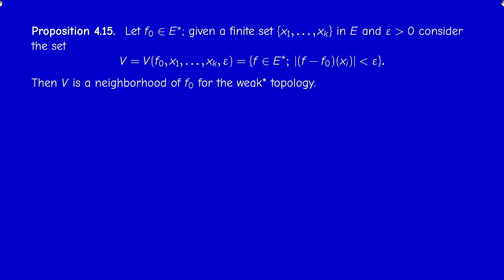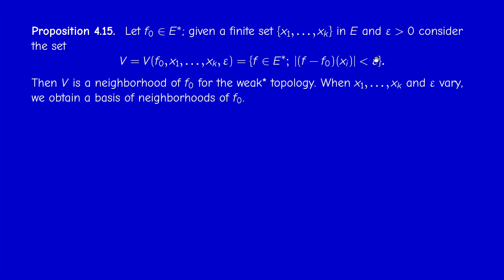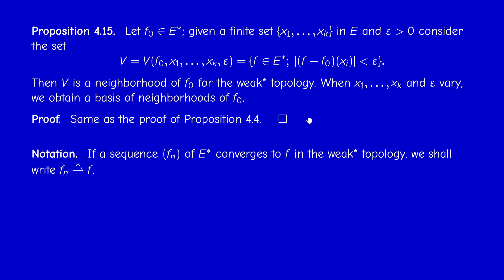V is a neighborhood of f₀ in the weak-star topology, and as we vary the centers x₁, …, x_k and radius ε, we get a basis of neighborhoods of f₀. The proof is completely symmetric to the corresponding proof of Proposition 4.4 in the previous section — try to adapt or copy-paste that proof to this case.